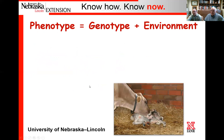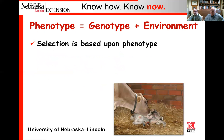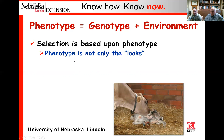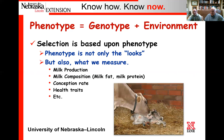Phenotype is what we see in an animal — what we can measure. It equals genotype plus the environment. Selection is based mainly on phenotype, which is the look of the animal and also what we can measure, such as milk production, milk composition, milk fat, milk protein percent, conception rates, reproductive traits, health traits, and productive life. In the beef industry, we would look at weaning weights, yearling weights, or calving ease — those types of things are phenotypic.